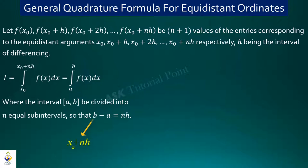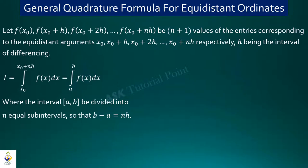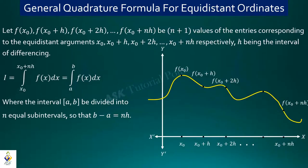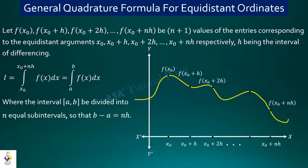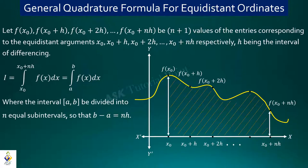b means x₀+nh and a means x₀, so if we subtract them we get nh. I am going to use a graph to define this arbitrary function representing the area with limit x₀ to x₀+nh.